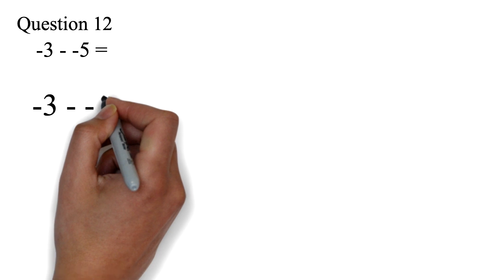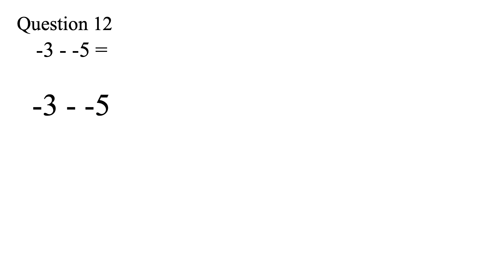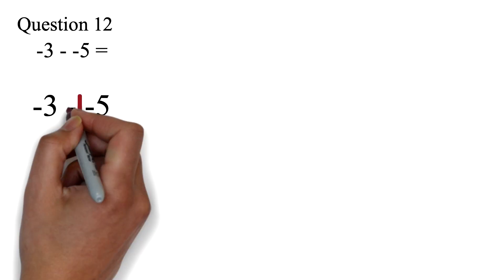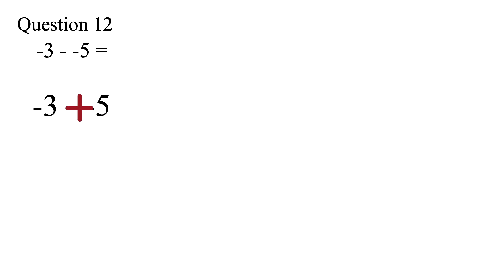Question 12. Negative 3 minus negative 5 equals. How to solve this is just like what we did in the previous question. The only thing different is that there are two signs in the middle. When you have minus negative, it is the same as plus.